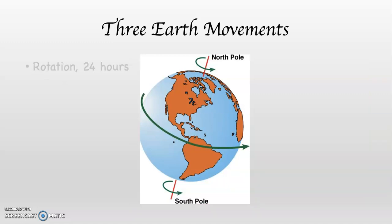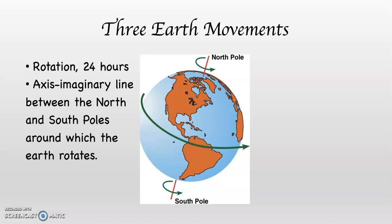The third movement is rotation. Rotation gives us our 24-hour day. This is how we have our clock. And if we're rotating, we're rotating around something. That thing is called the axis, which is the imaginary line between the north and south poles around which the Earth rotates.